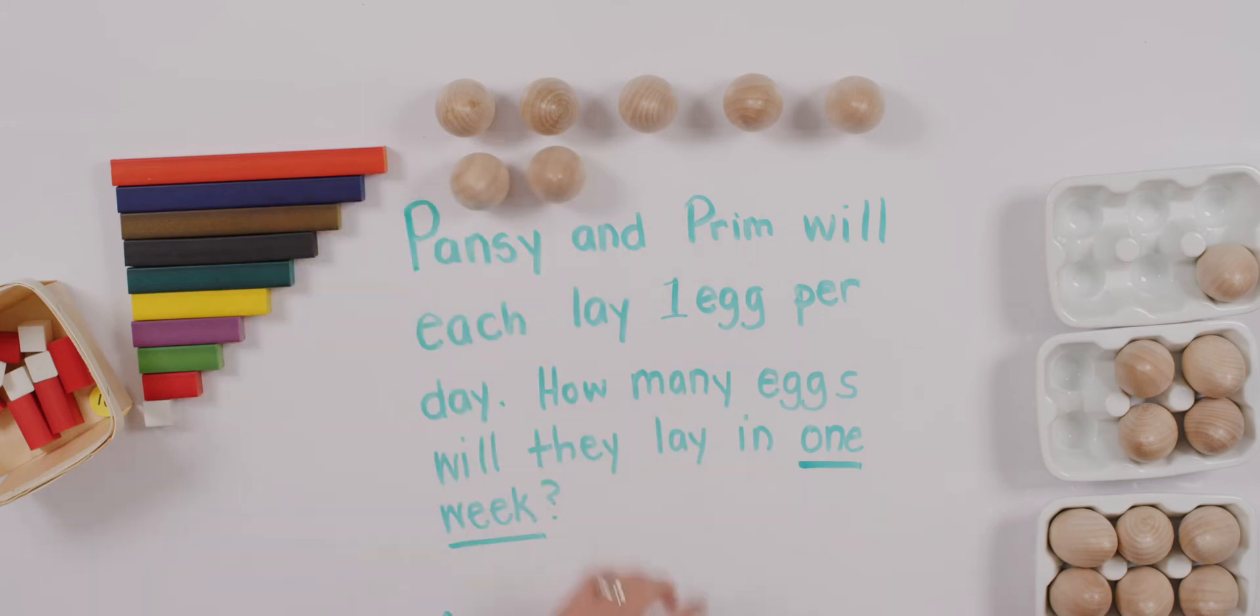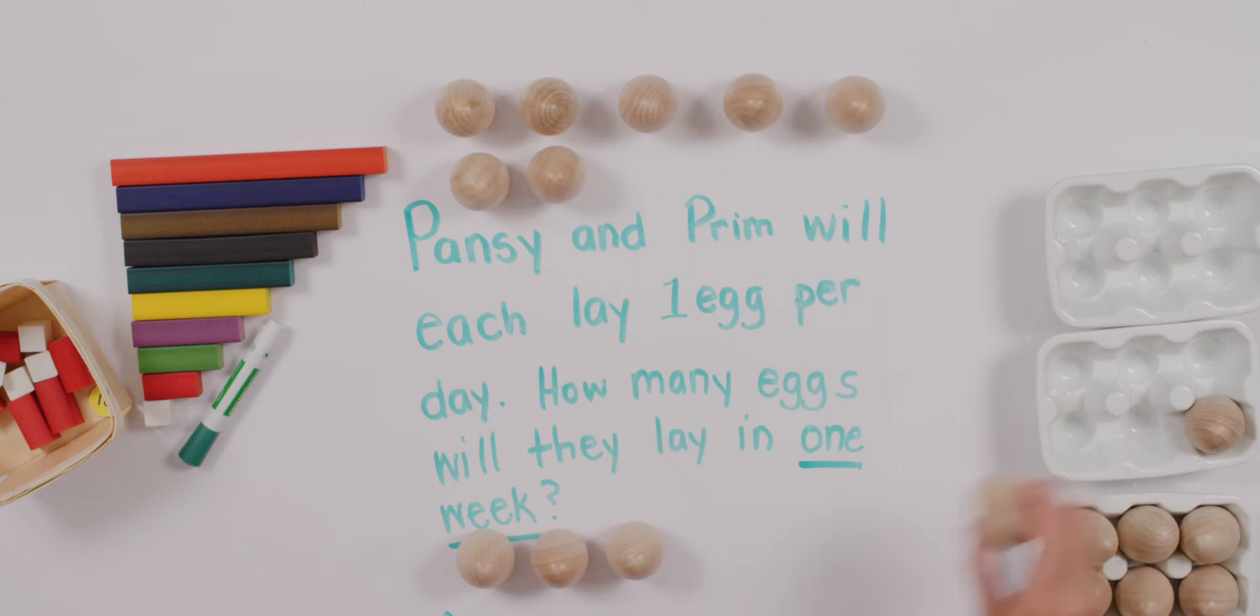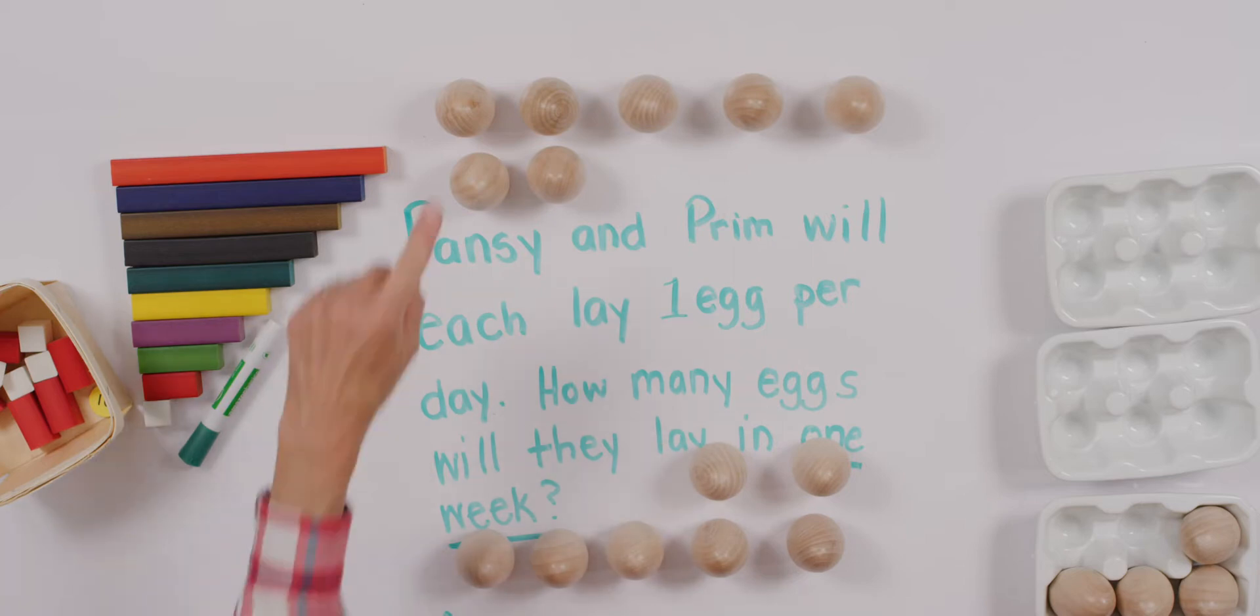We can say that these are Pansy's eggs, right? Well, what about Prim? She's going to lay her eggs too. How about we put her eggs down at the bottom? One, two, three, four, five. We're almost there. I'm going to go this direction. Six. I know I'm covering up some of my words, aren't I? Seven. Seven eggs and seven more eggs.